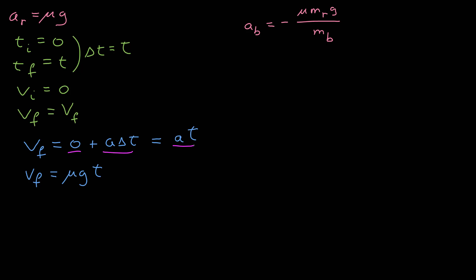Substituting in for the acceleration, I have that the final velocity is the coefficient of friction times the acceleration due to gravity times the time interval. Looking at the other side, for blue, the initial velocity was v, and the final velocity was the same as the final velocity for red.